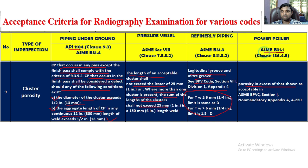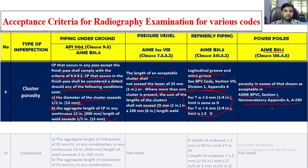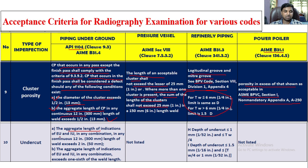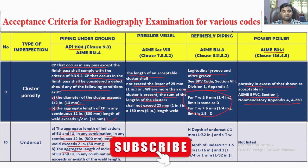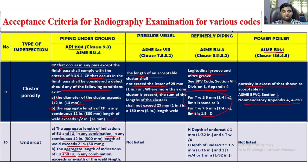For ASME B31.1, porosity in excess of that shown as acceptable in ASME BPVC Section 1 non-mandatory appendix A, figure A250, must be checked for cluster porosity. For undercut: the aggregate length of indications EU and IU in any combination in any continuous 12-inch length, or if aggregate exceeds 1.6 of the weld length, it will be rejected. Not listed in ASME Section VIII. For ASME B31.3: depth of undercut ≤ 1 mm and ≤ Tw/4; for other cases, depth ≤ 1.5 mm and ≤ Tw/4 or 1 mm. Not listed in ASME B31.1.